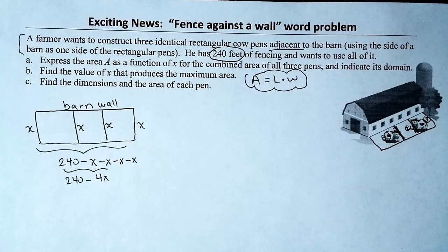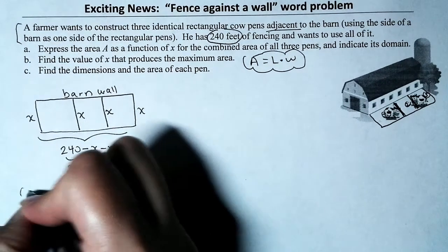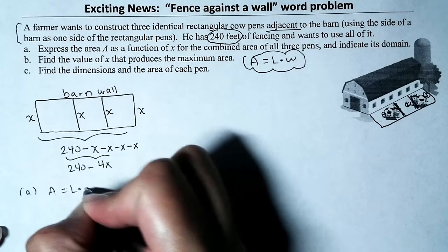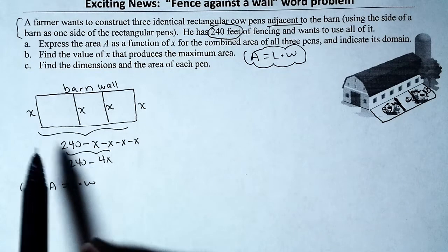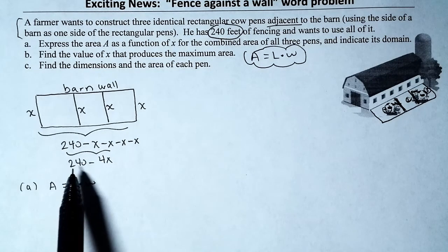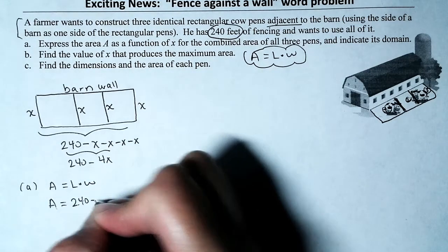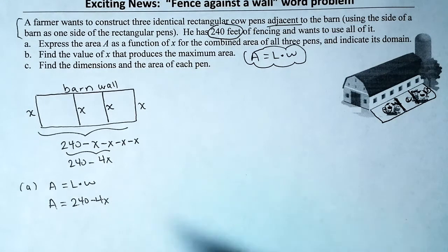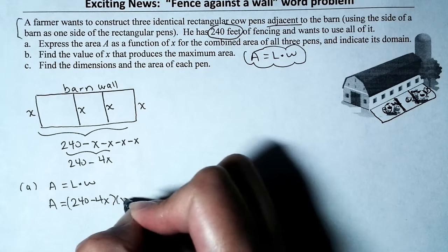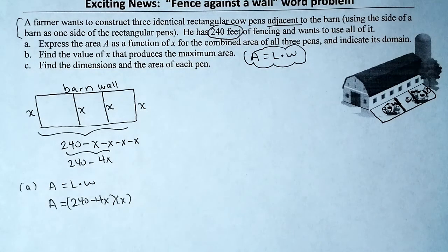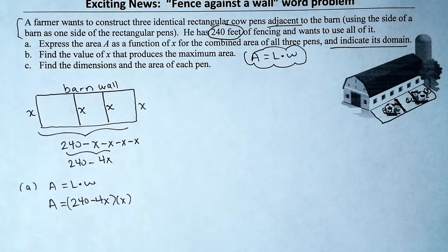For Part A, to find the area as a function of x: Area equals length times width, so A equals (240 minus 4x) times x. That's our area function.